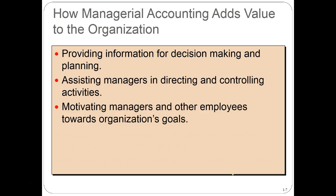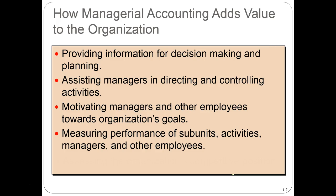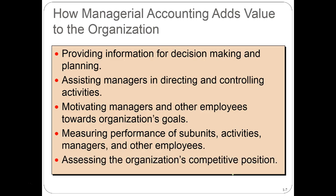Third, motivating managers and other employees towards organizational goals. We need to put together information to help motivate employees, noting that employees aren't always going to have the same objectives as the business. Our goal is to align objectives so that employees are motivated towards the same goals as the company. Fourth, measuring performance of subunits, activities, managers, and other employees — rewarding those doing well and identifying areas for improvement. Fifth, assessing the organization's competitive position relative to the market and what changes or innovations are needed.